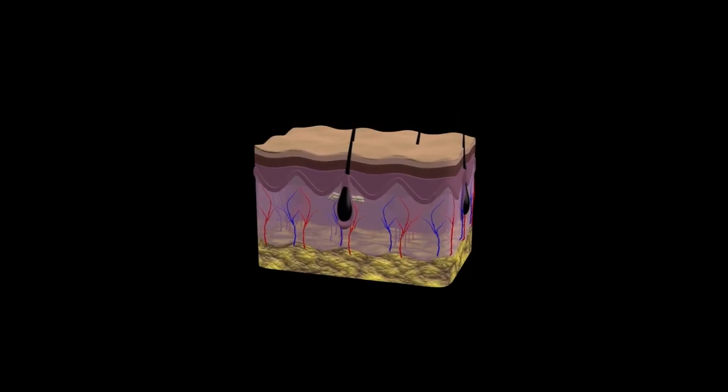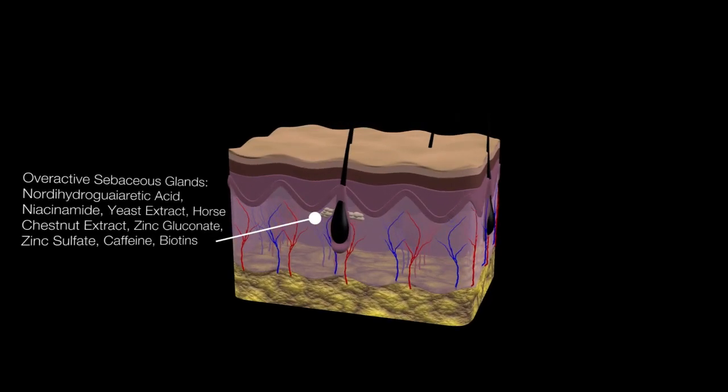So what can we do to treat acne, now that we understand the physiology and the causes? Let's review some of the ingredient technology available to us as skin therapists. By inhibiting the activity of the overactive sebaceous glands, we not only eliminate the food source for the bacteria, but we also eliminate oily shine. Look for sebum-regulating agents like niacinamide, yeast, horse chestnut, sarcosine, and zinc gluconate.